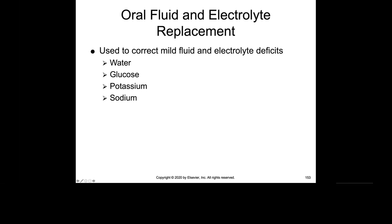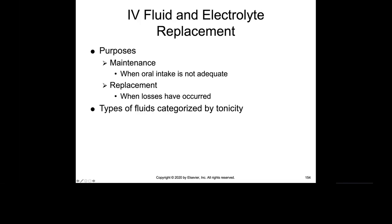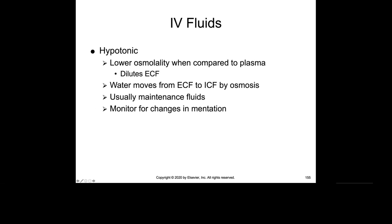Oral fluid and electrolyte replacement uses water and glucose or water and sodium, sometimes with added glucose and potassium. The purpose is to maintain fluid balance when oral intake is not adequate and when losses have occurred. Types of fluid are categorized by tonicity. On page 291, table 1618 shows the different types of IV fluids — whether they're isotonic, hypertonic, or hypotonic — along with their indications and considerations.